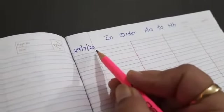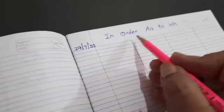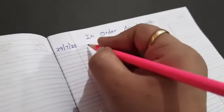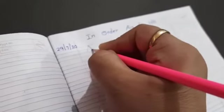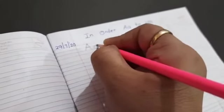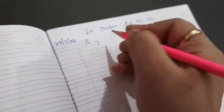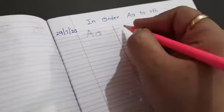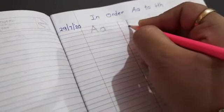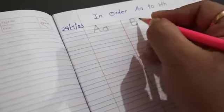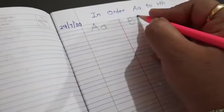In order A to H, first we will write capital A from red line to second blue line, like this. And small a between two blue lines. Now we will write B, capital B, as I am showing you. Now we will write small b.